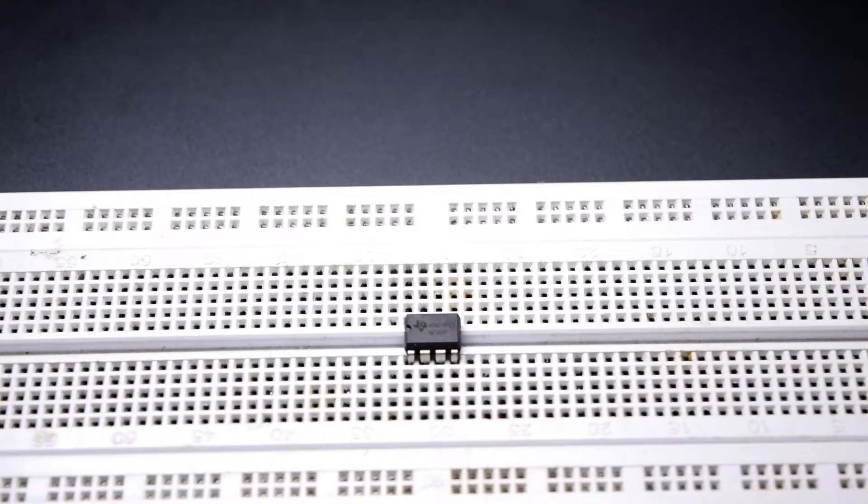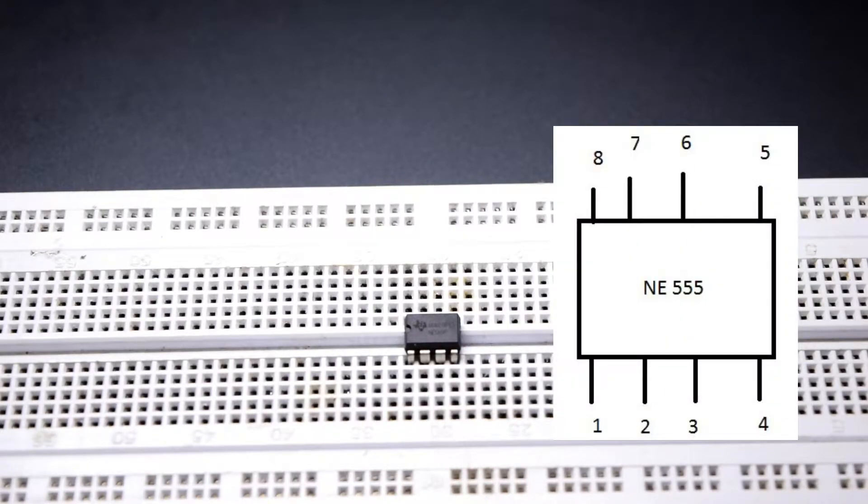The first step is to insert the 555 timer IC on the breadboard. This is the pin configuration of the timer.